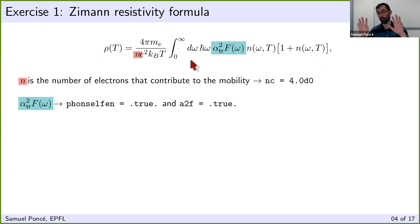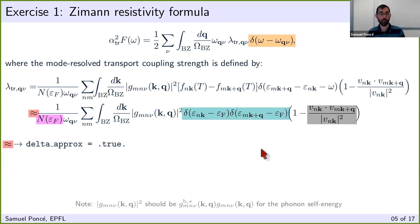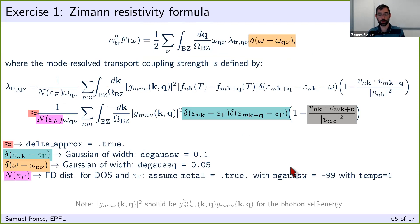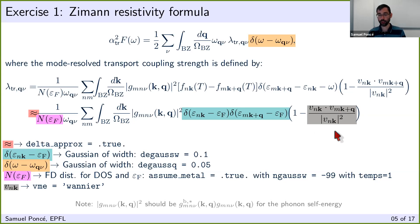If you want to change the temperature range you need to modify the code directly — there is no input variable for that at the moment. The key point is that temp here does not mean the temperature in the previous formula, whereas in the Boltzmann transport equation the input variable temps really is the phononic temperature. Here it's more the electronic temperature.